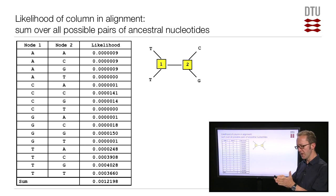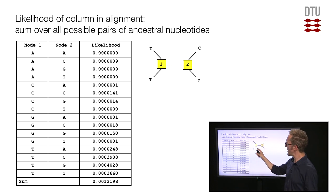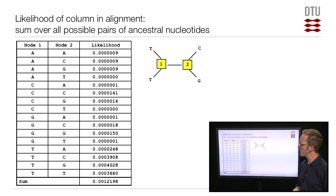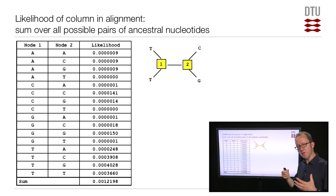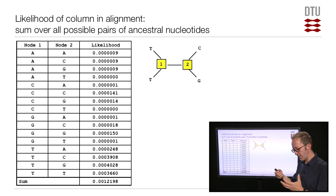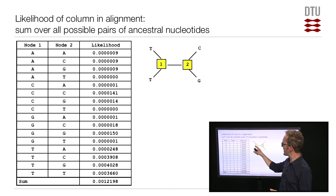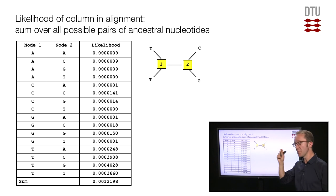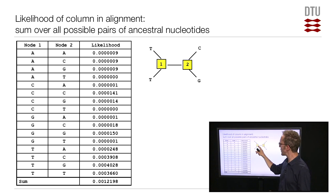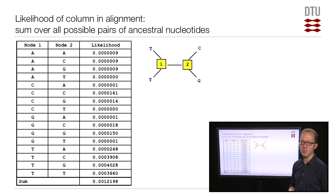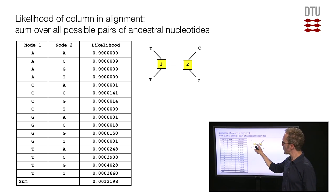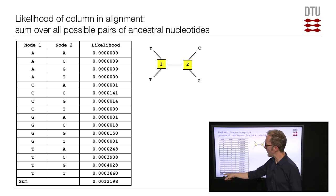Remember, this is one column in the alignment — we're doing this one position in the sequence at a time. How would you think about what the ancestral sequence was for this particular position? You wouldn't actually do it for two ancestral sequences at a time. Typically, if you're trying to reconstruct an ancestral sequence, you will be interested in just the sequence at one ancestral node — for instance, the ancestor of all mammals or the ancestor of all vertebrates. To do that, you will focus on one of the ancestral nodes.